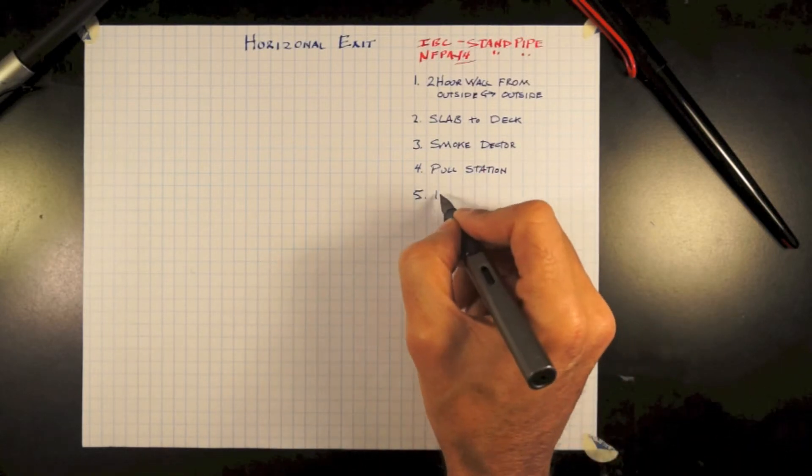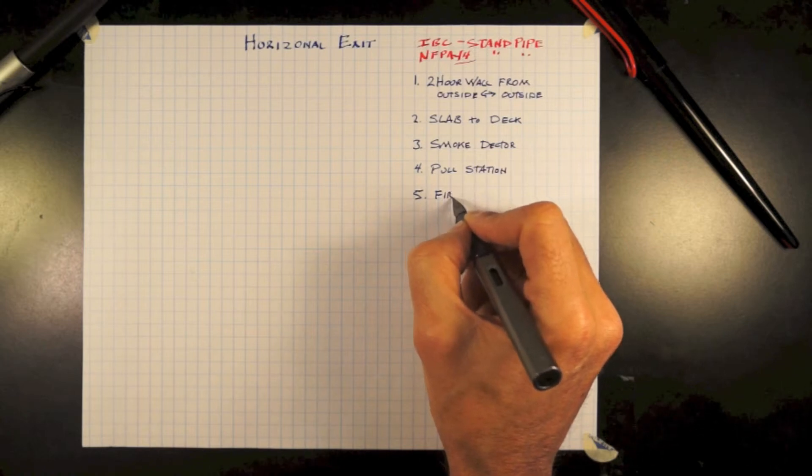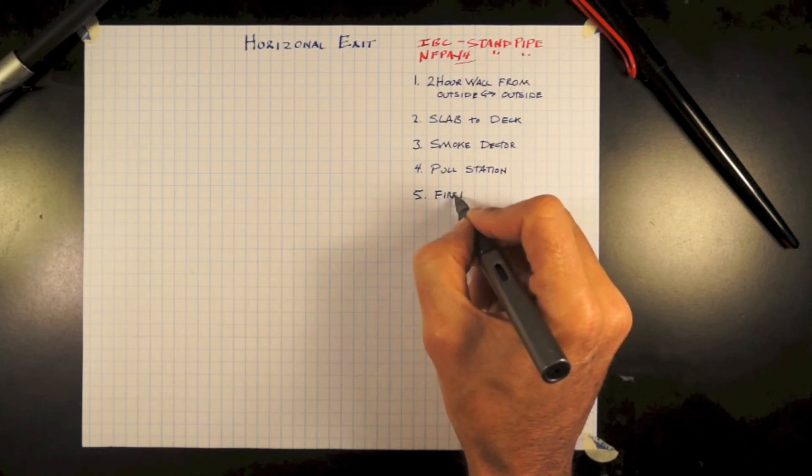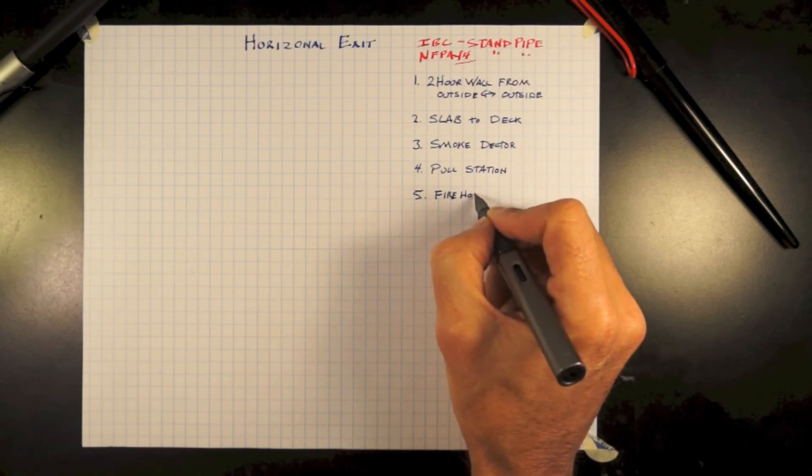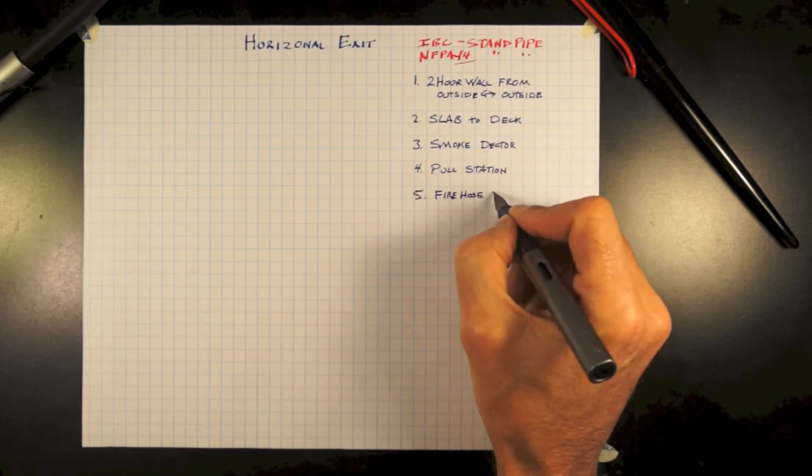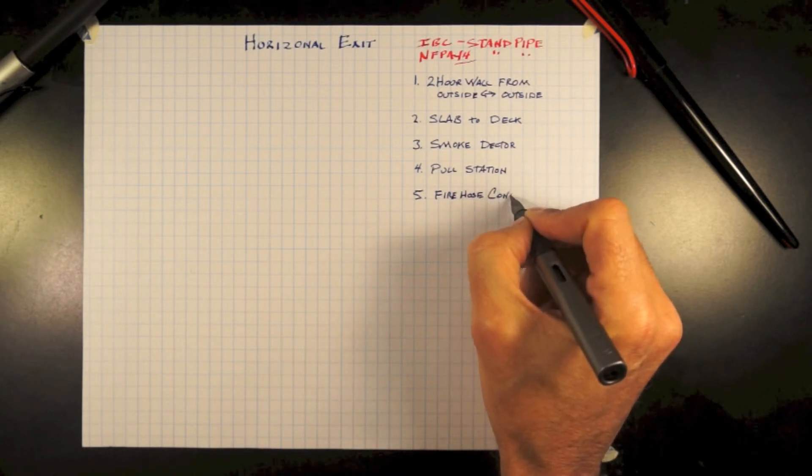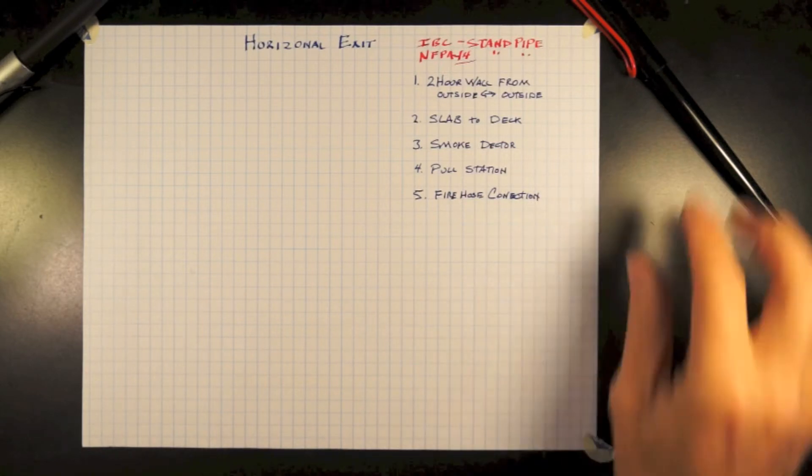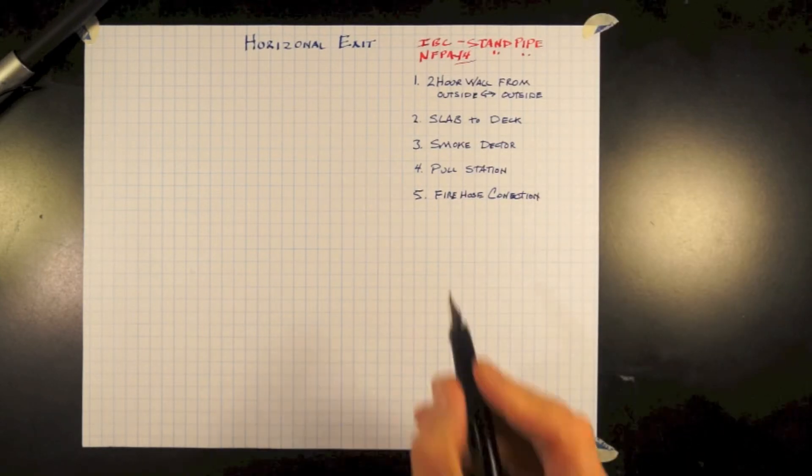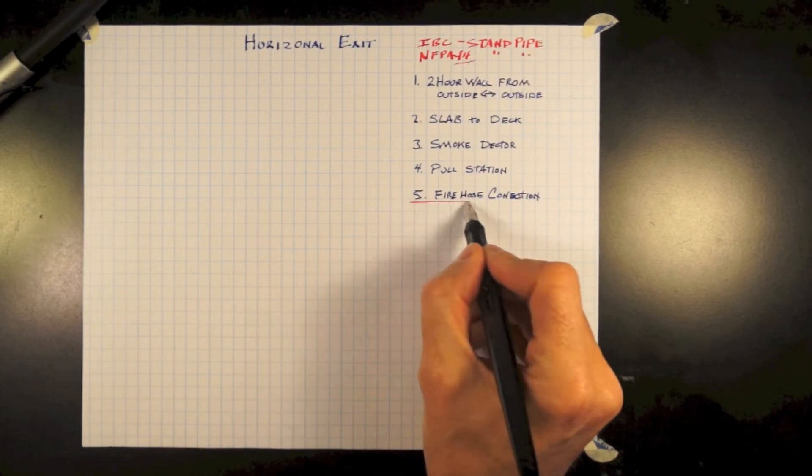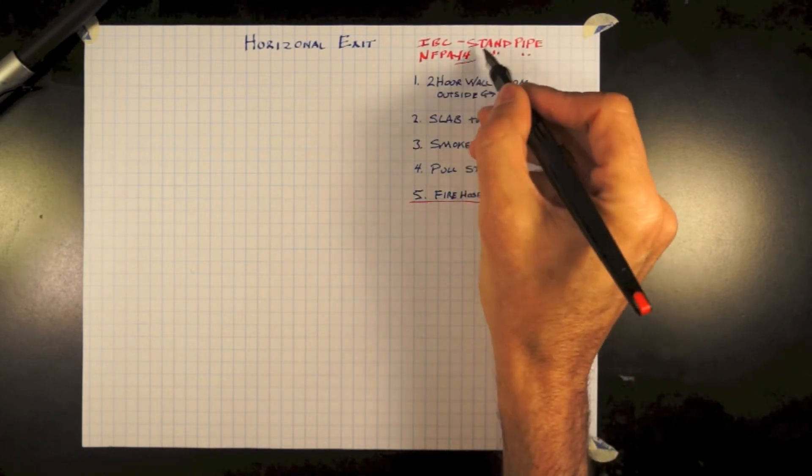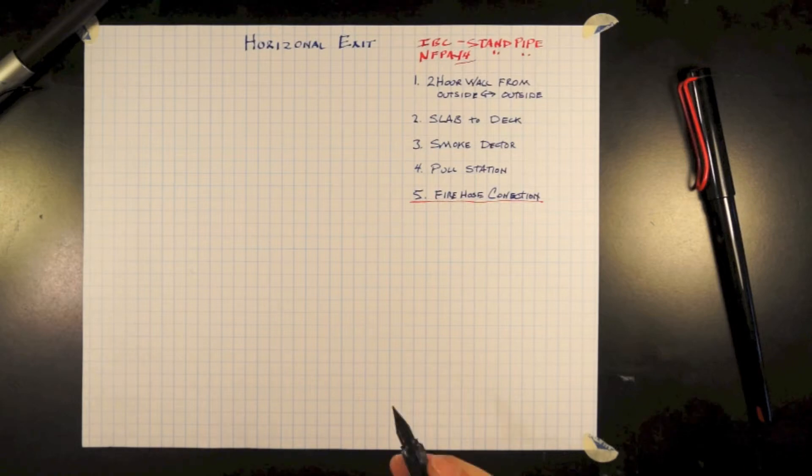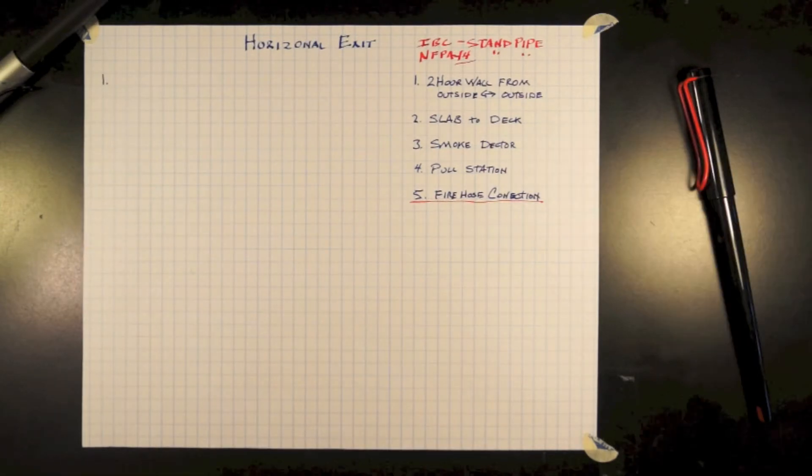You must have a fire hose connection cabinet on each side of a horizontal exit. And that is in an obscure section in IBC under Standpipes and NFPA 14. All other requirements for a horizontal exit is located in the building code. The fire hose connection cabinet is only located in these two sections.